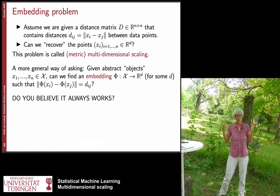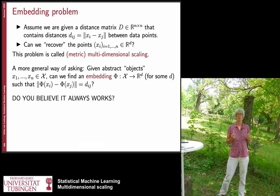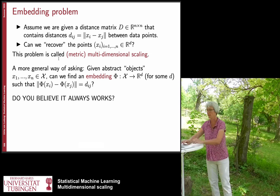Now assume you are given n such objects and you have all pairwise distances. You could stack all these pairwise distances into a matrix called the distance matrix on your data. This is an n times n matrix realizing all the distances between pairs of data points. The question is: given this distance matrix, can you find points in a Euclidean space R^d such that these points realize the given distances between your abstract objects?